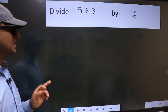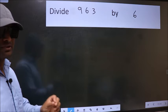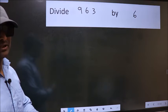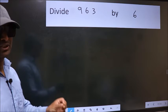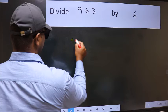Divide 963 by 6. While doing this division, many do this mistake. What is the mistake that they do? I will let you know, but before that we should frame it in this way: 963.